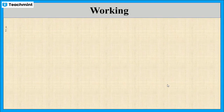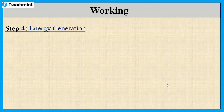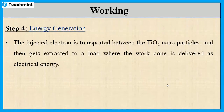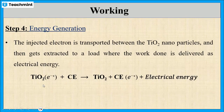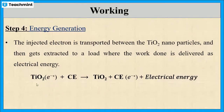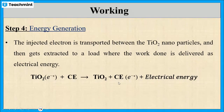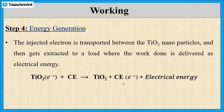In the final step, the electrons received by the titanium oxide are in an excited state, which is not stable. Hence these electrons move through the external circuit and are received by the counter electrode. The counter electrode is the platinum electrode. There will be a flow of electrons from anode to cathode, which produces electrical energy.